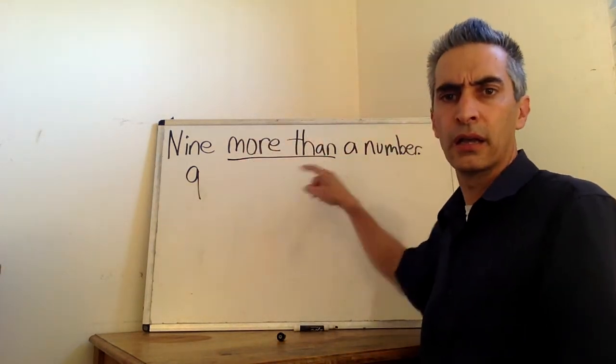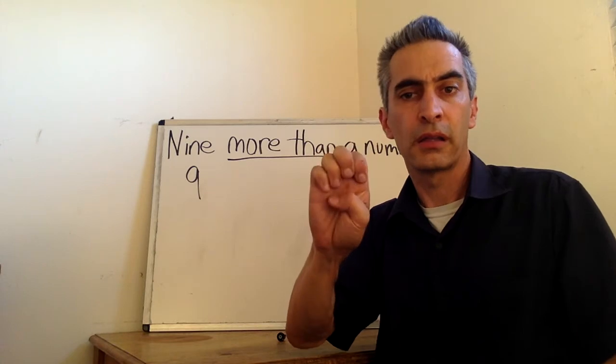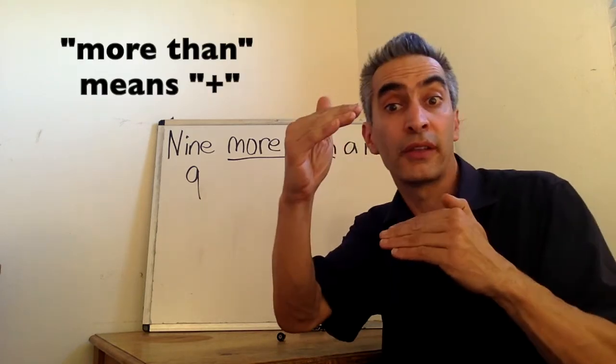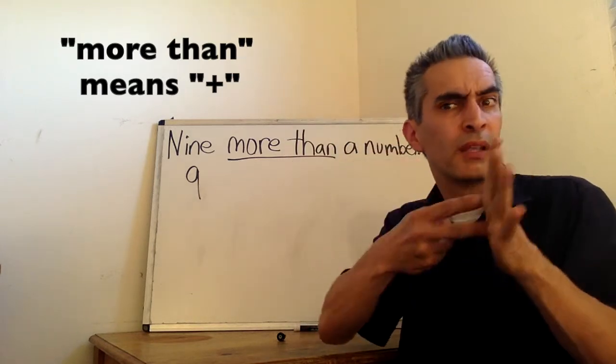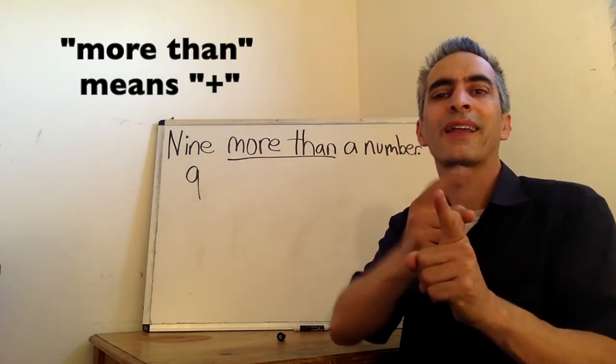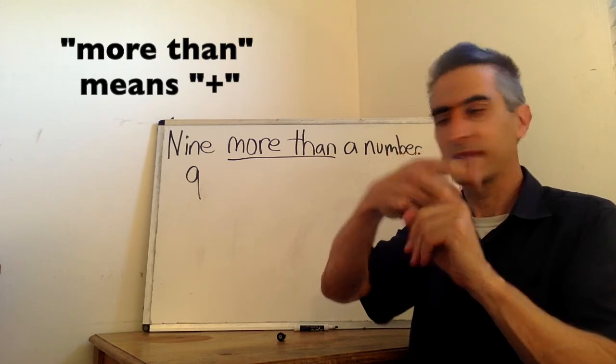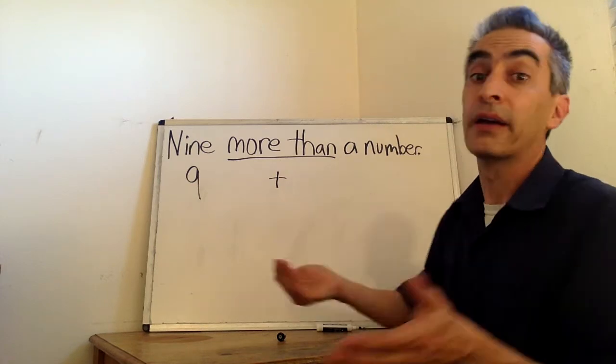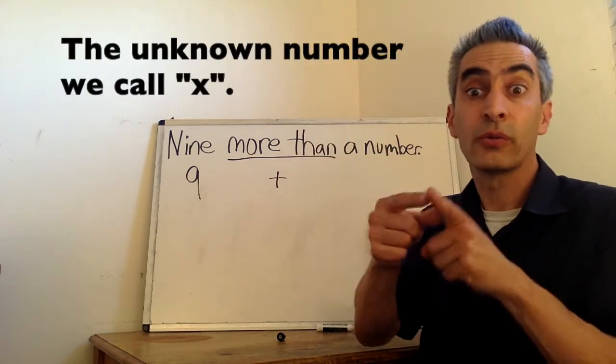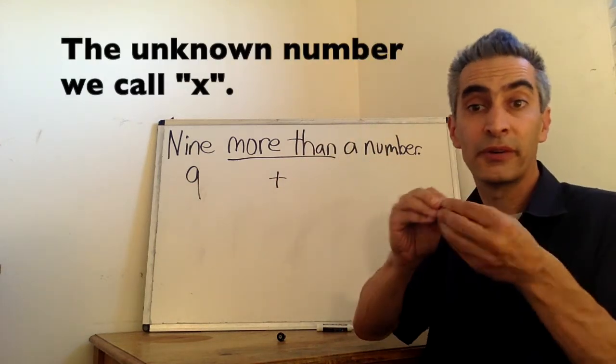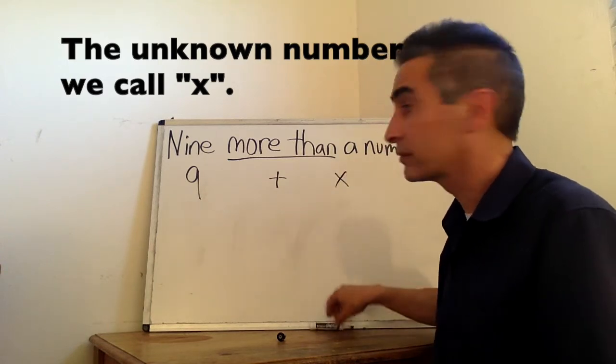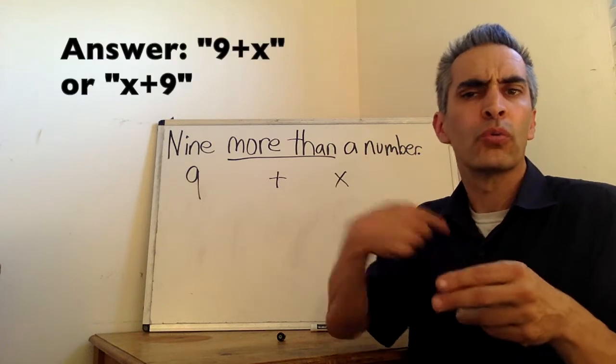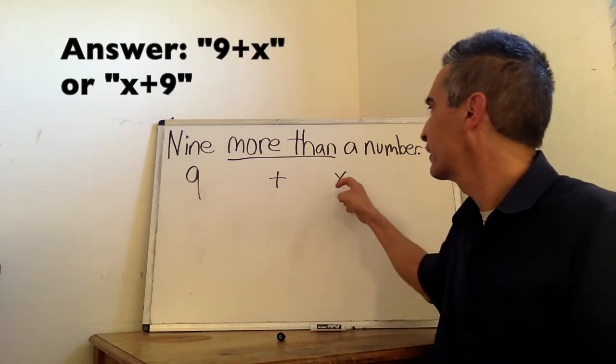Now, these two words. What do they mean? Right. More than. More than means plus. Yes, plus. Again, we see the word number. And we don't know the value of this number. So, we're going to name it x.